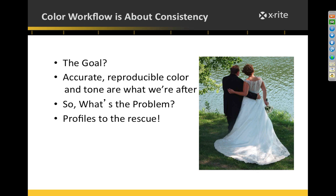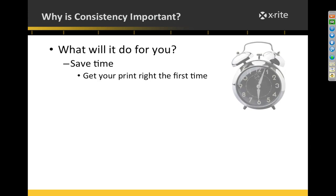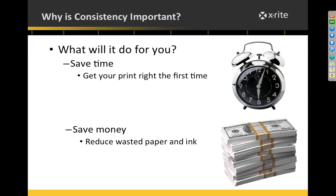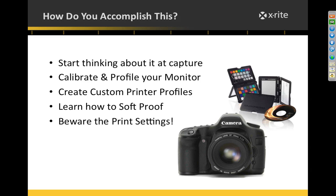Consistency is what allows us to get reproducible color. Your monitor can display colors that your printer can't print — it's a backlit RGB device, while your printer uses CMYK inks, so they're going to be a little different. But if we can get accurate and reproducible color, we'll have consistent results. Profiles basically translate color from one place to another so they reproduce as closely as possible. This consistency will save you time, money on ink and paper, and a lot of frustration.